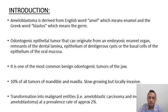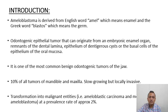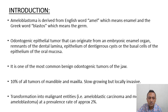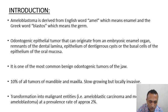Ameloblastoma is derived from the English word 'amel' which means enamel and the Greek word 'blastos' which means germ. It is an odontogenic epithelial tumour that can originate from an amelogenic enamel organ, remnants of the dental lamina, epithelium of the dentigerous cysts, or the basal cells of the epithelium of the oral mucosa. It is one of the most common benign odontogenic tumours of the jaw, comprising 10% of the tumours of the mandible and maxilla. It is slow growing but locally invasive, and malignant transformation is seen at a rate of 2%.